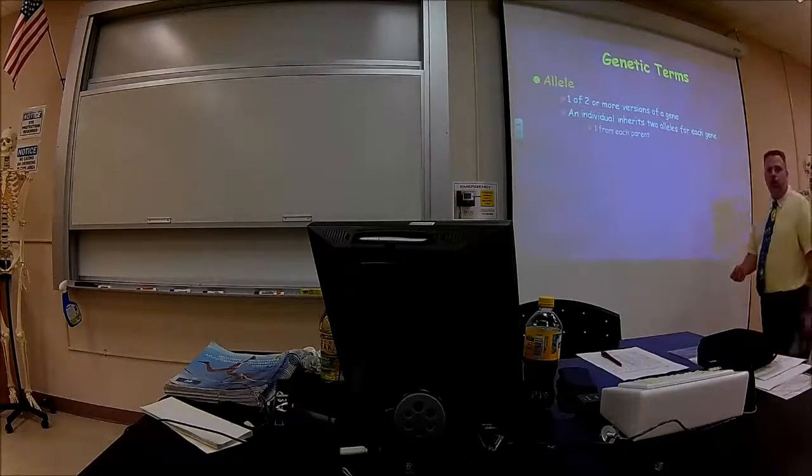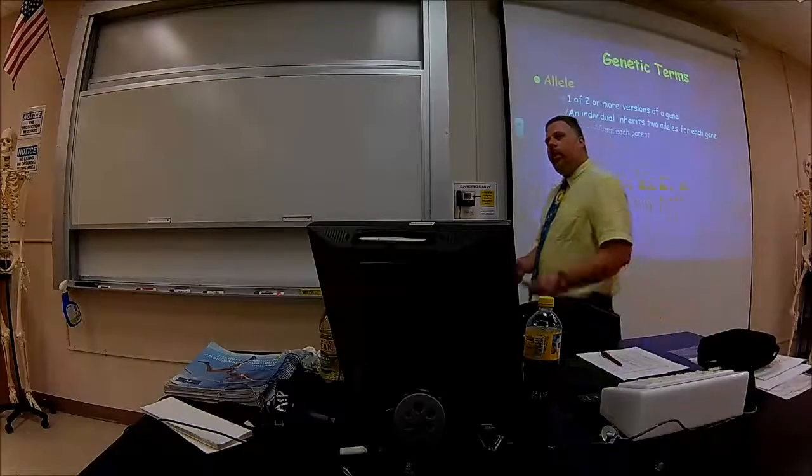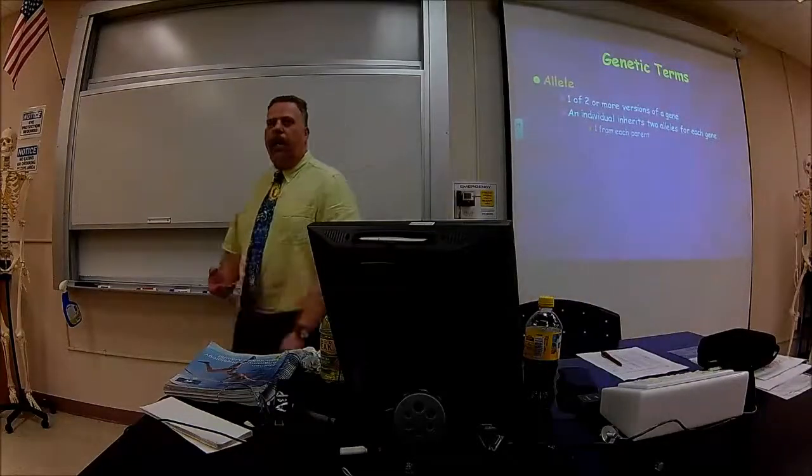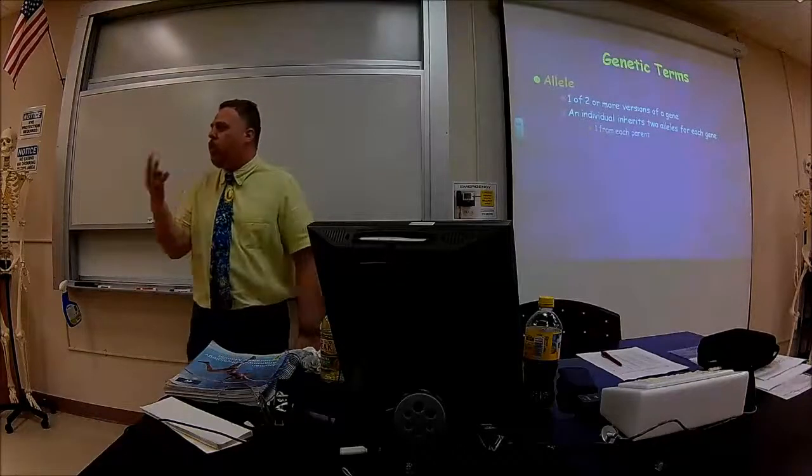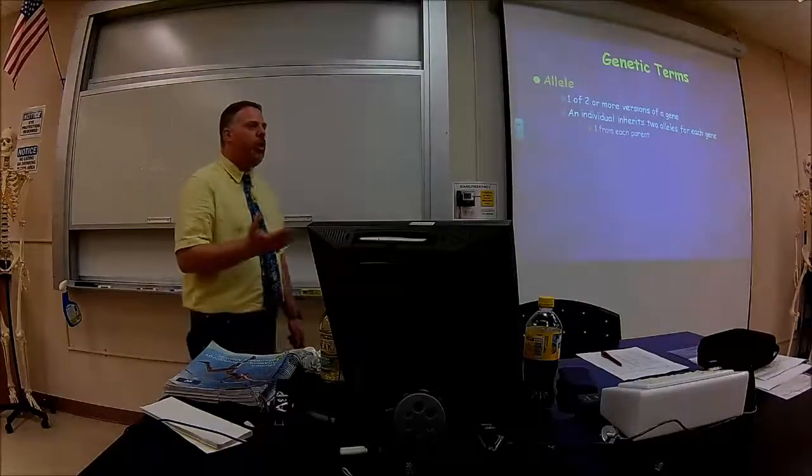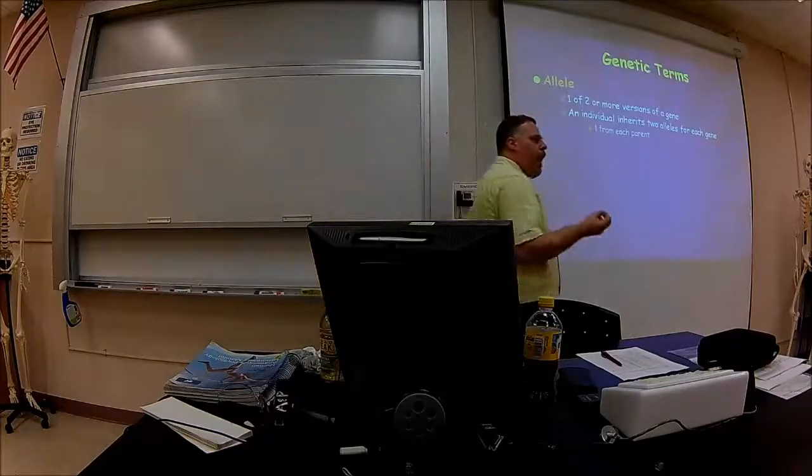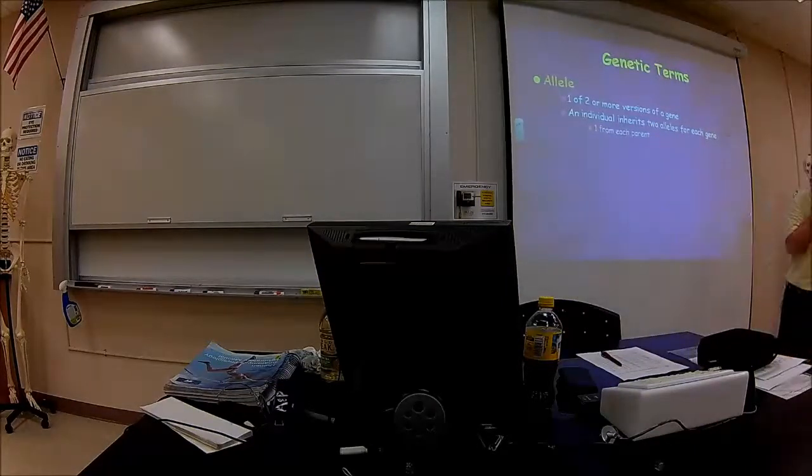There's something called an allele. An allele is one or two versions of a gene, and it can be more than one version. A gene is eye color. An allele is blue eye color, green eye color, red eye color, brown eye color. So we have four different alleles that I just mentioned to the gene of eye color. Does that make sense?